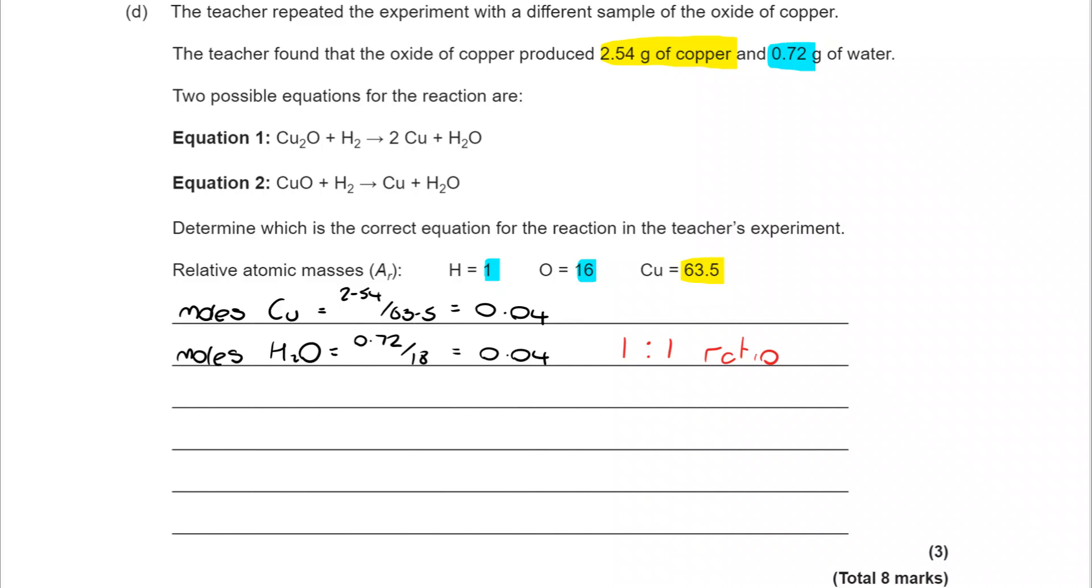We then go back to the equations and find which reflects the fact that we're making one mole of copper for every mole of water. Equation one has a two to one ratio, as we can see from 2Cu + H2O. Whereas equation two has the one to one ratio. That means the correct equation is equation two.